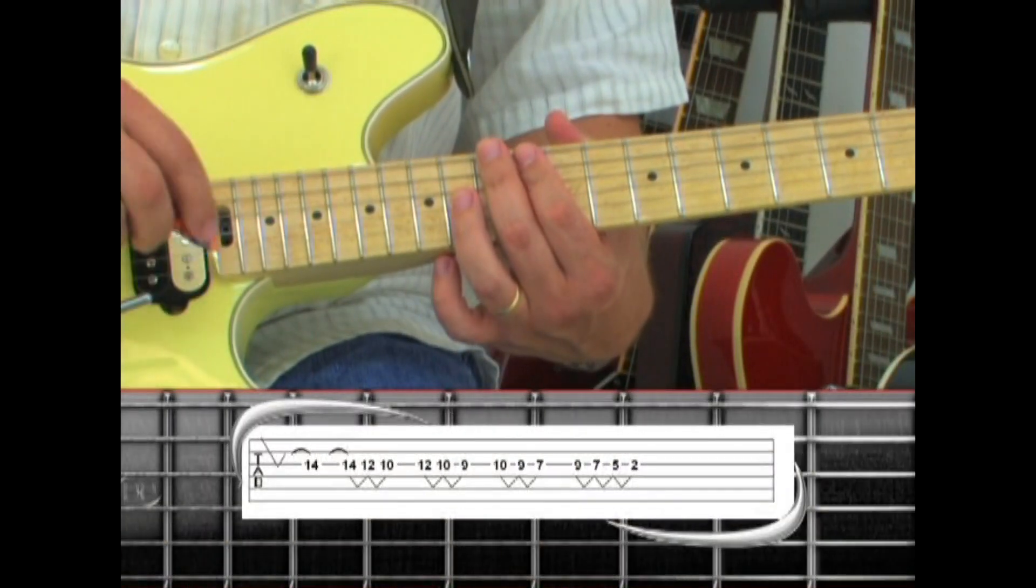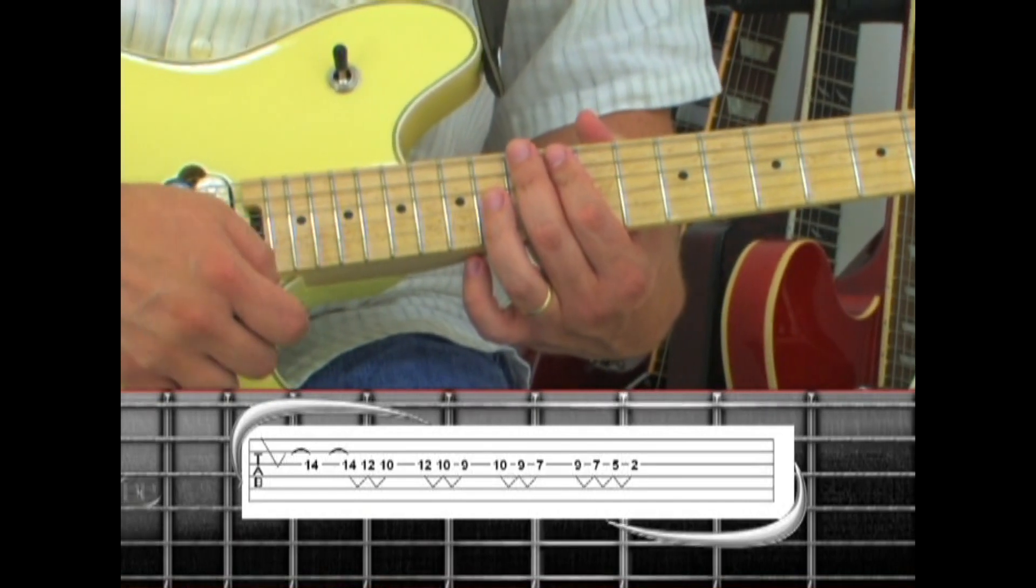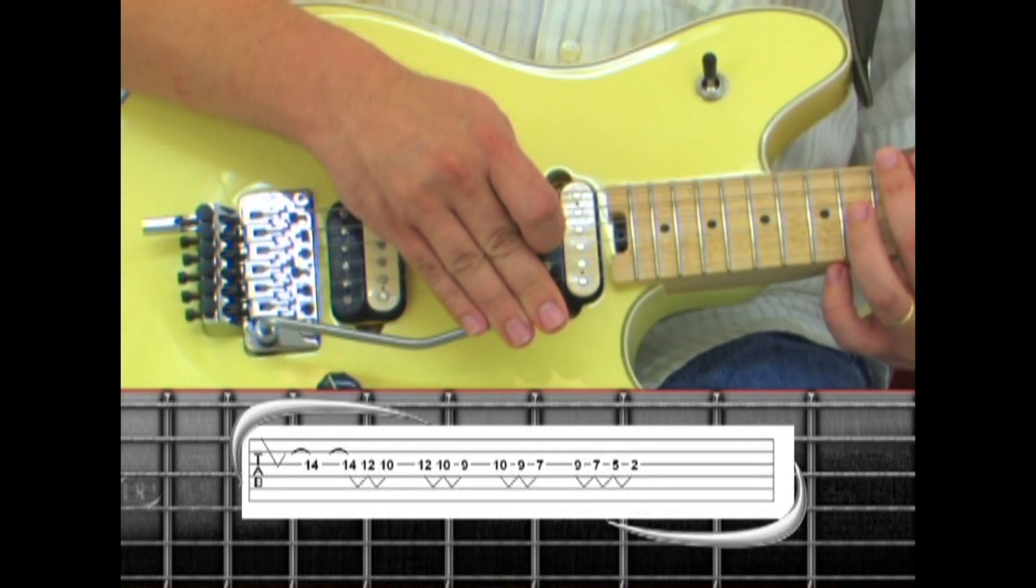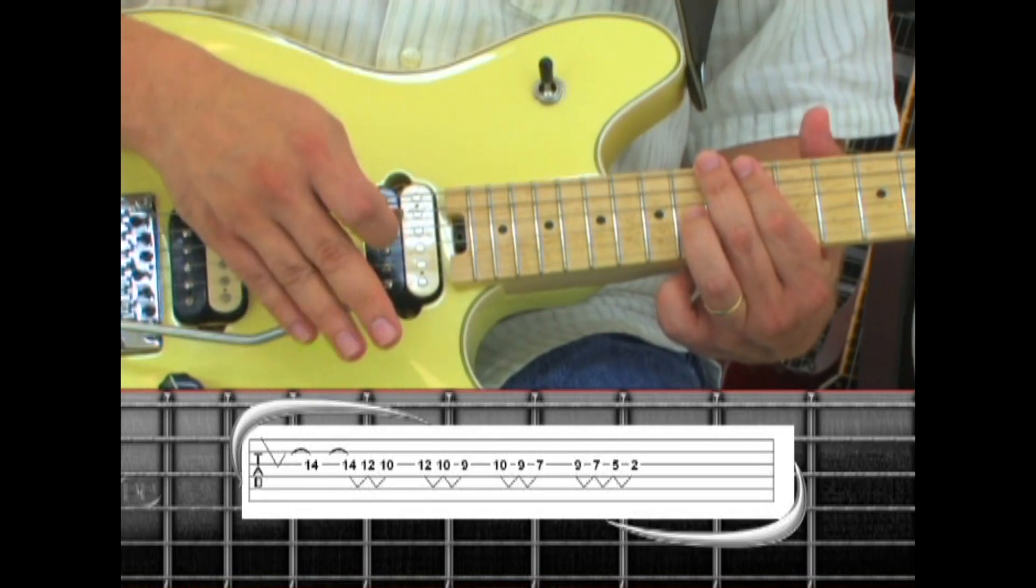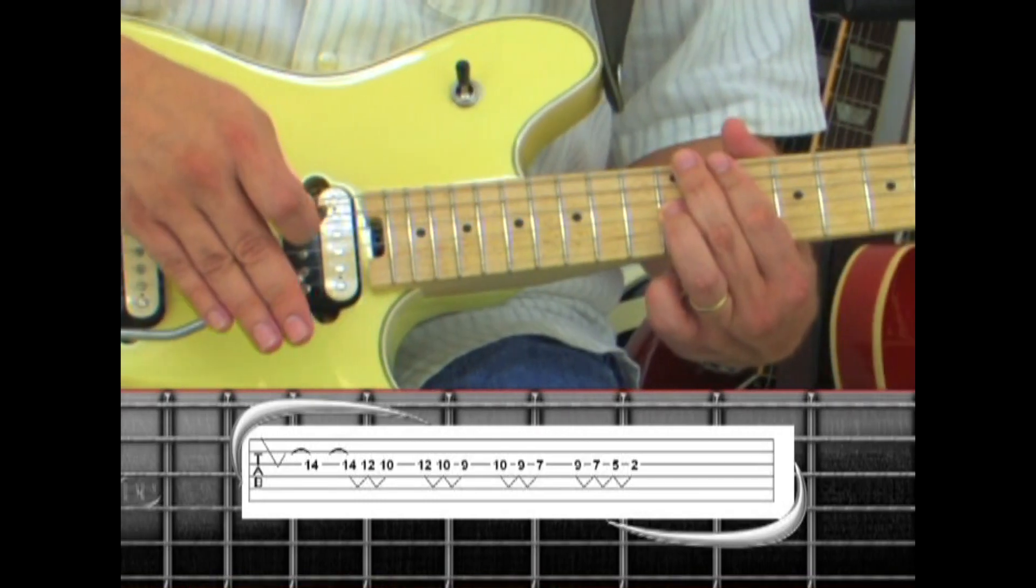There is an overdub guitar during the halftime section. Starting on the 3rd string, 14th fret, dip the tremolo bar and return by hammering to the 14th fret. Play the note again, dip and return, and slide down to 12, dip and return. Slide down to 10.